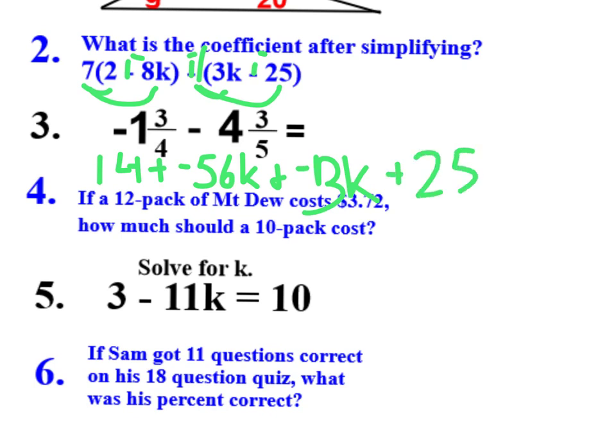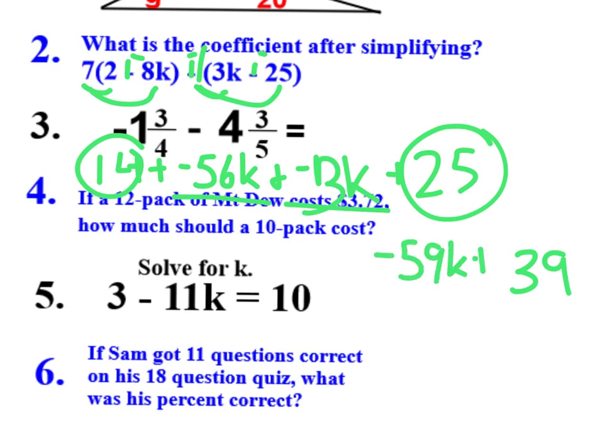Now I combine my like terms. Remember, like terms have to have the same variable to the same exponent. So 14 is what we call a constant, like 25. They have no variable to no power, so we can add those together. They're on the same team. They're both positive, so we get 39. And then k's match k's. These two happen to have the same sign also, so you get negative 59k plus 39.